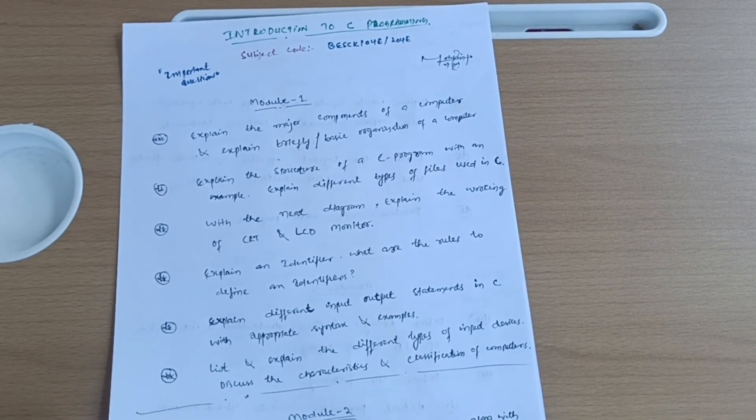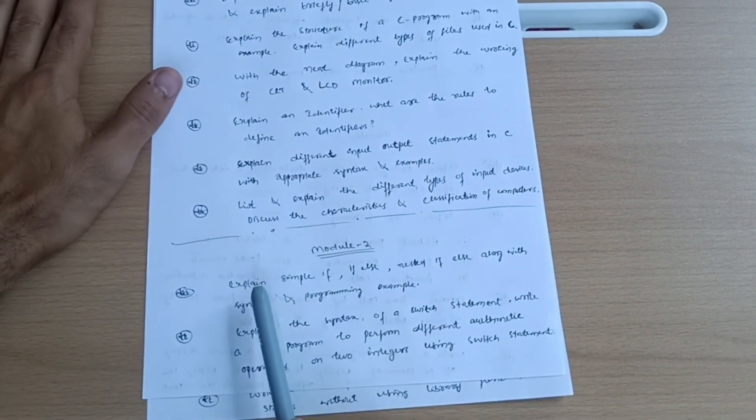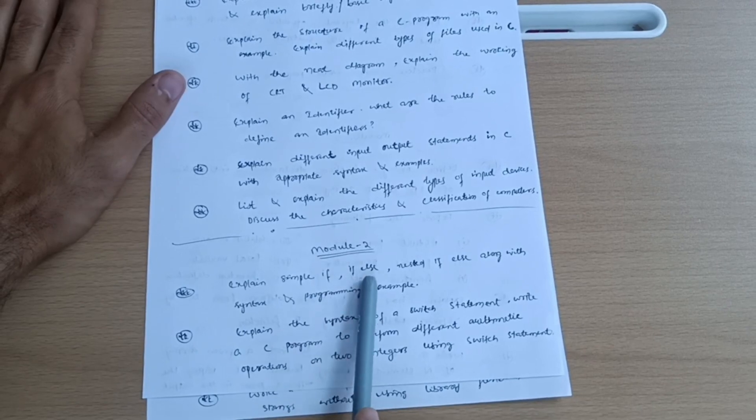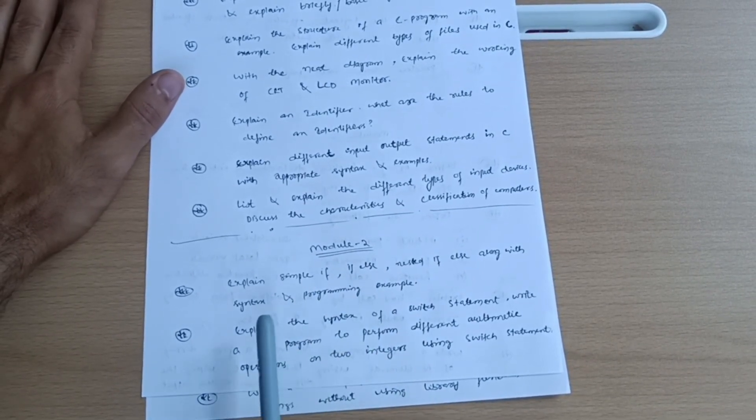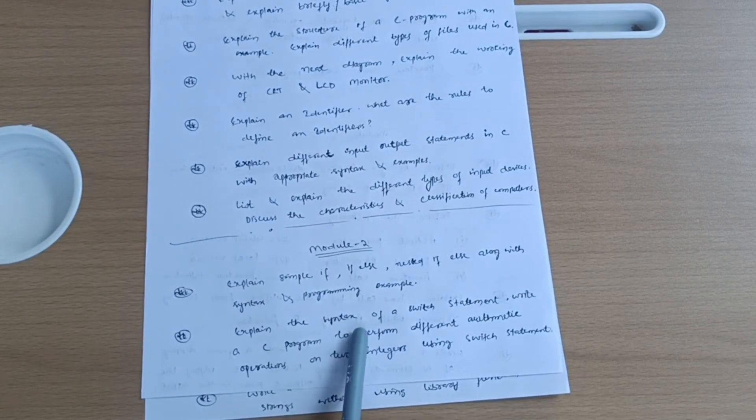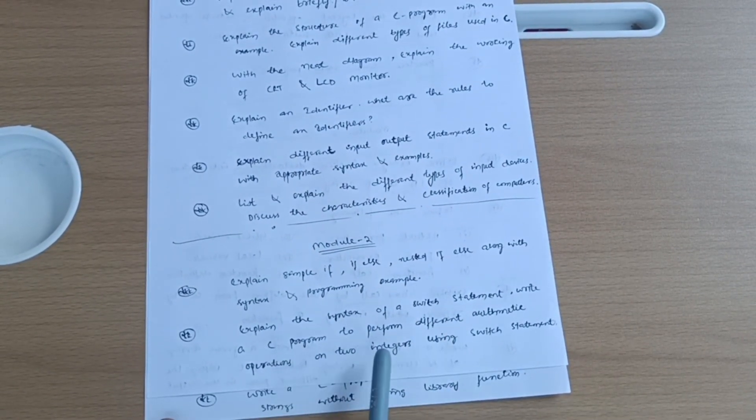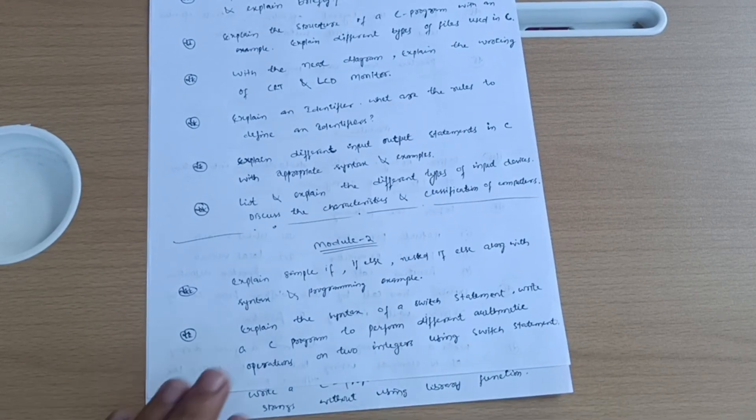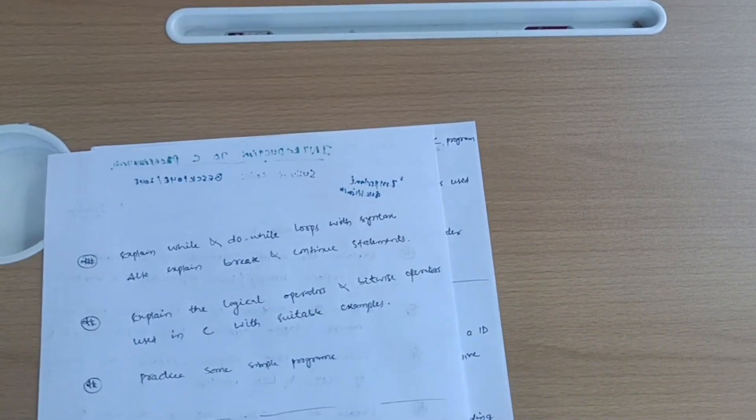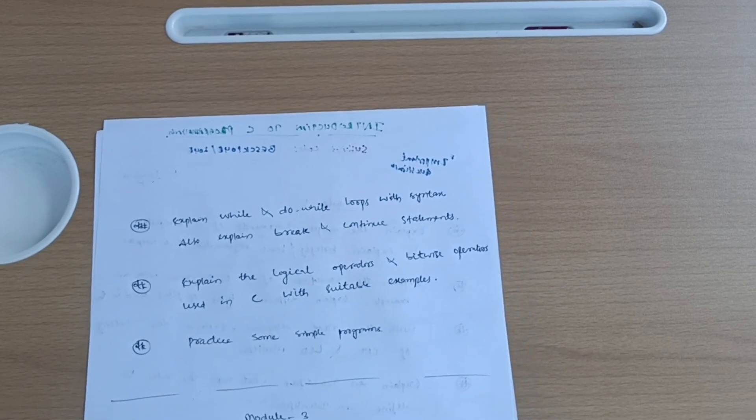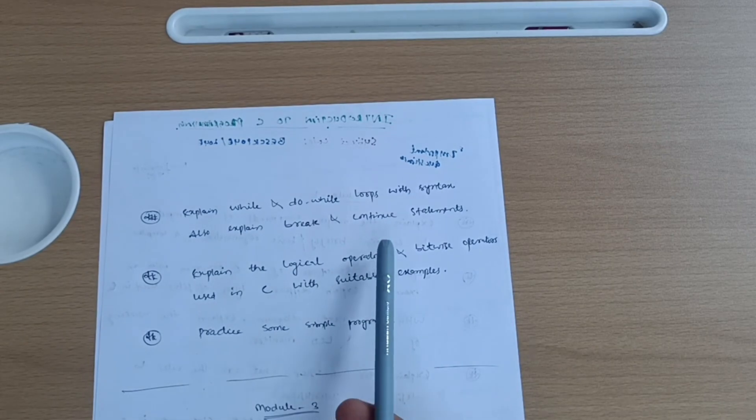Next passing module is module second, in which you have to cover questions like: explain simple if, if-else, nested if-else along with syntax and programming example. Explain the syntax of a switch statement. Write a C program to perform different arithmetic operations on two integers using switch statement. Next, explain while and do-while loops with syntax and explain break and continue statements.